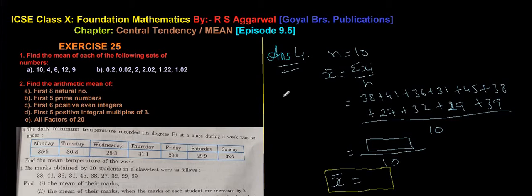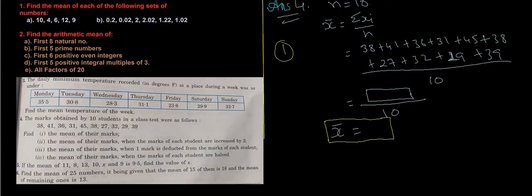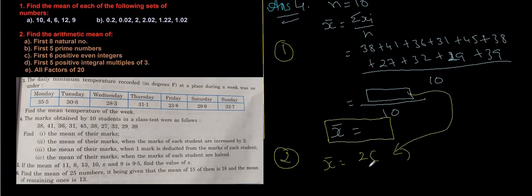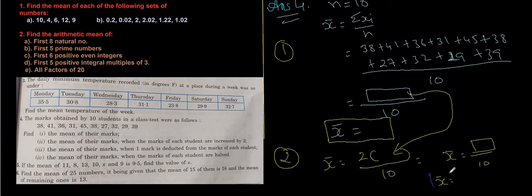The second part of question 4 asks: find the new mean when the marks of each student are increased by 2. The number of students remains 10. Add 2 to each student's marks, compute the new total, divide by 10, and write the new x̄ in a box.